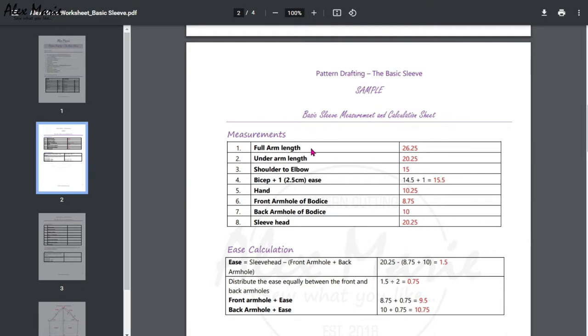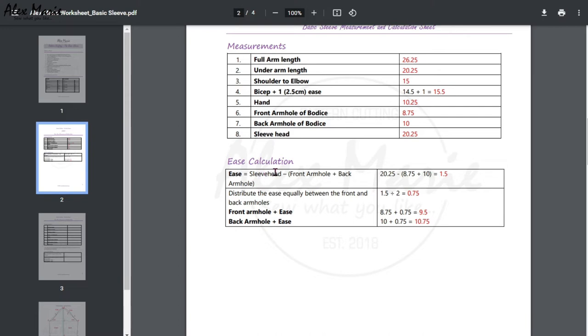calculations are done. You have your full arm length, under arm length, shoulder to elbow, your bicep plus one inch ease, your hand measurement, front armhole of bodice, back armhole of bodice. Now front and back armhole of bodice are taken from your bodice, so you have to have drafted a bodice to attach this sleeve to. Same with the sleeve head. The sleeve head is taken after you draft the sleeve, so you fill that in later. Remember there is a link to how to take measurements attached below or up here somewhere, so check that out.